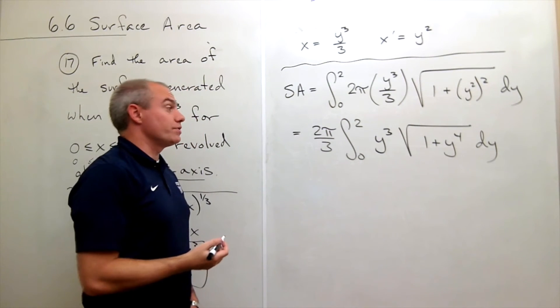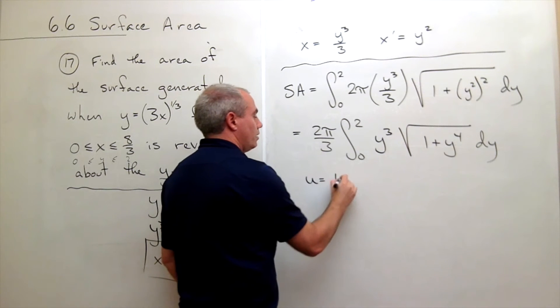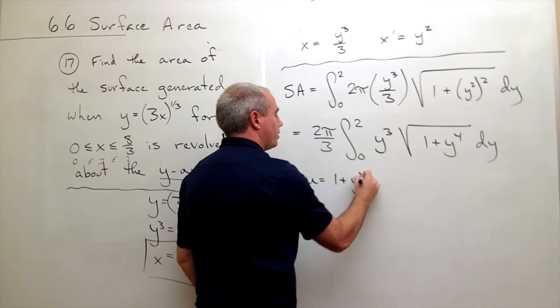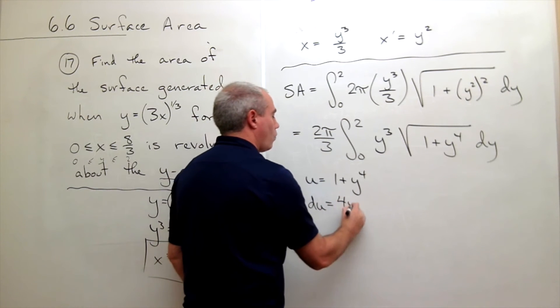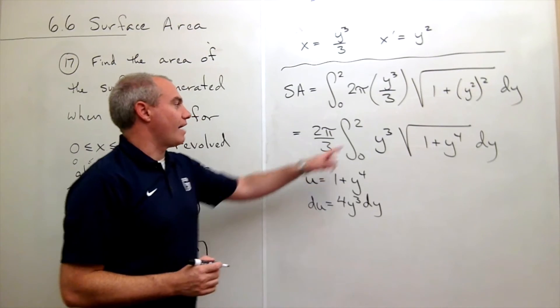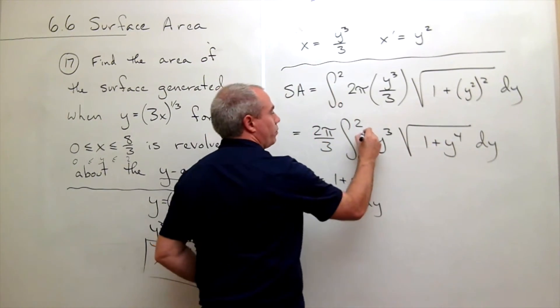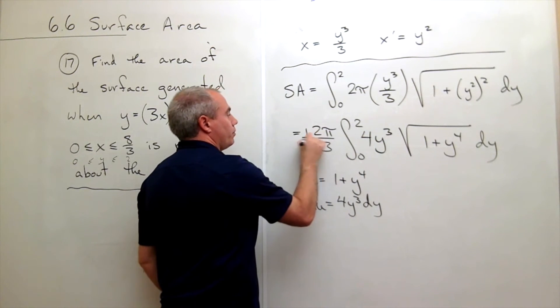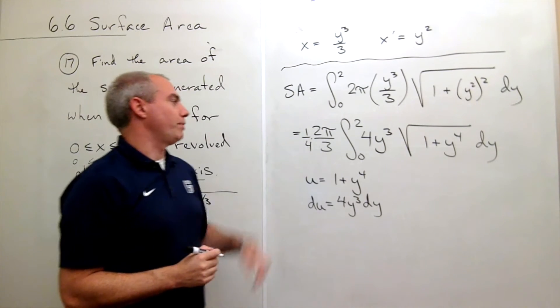This is a u substitution, so I'll let u be equal to 1 plus y to the 4th, which means that du will be 4y cubed dy. I have a y cubed dy, I need a 4y cubed dy, so I'll just put in a 4 and put in a 1/4 outside. So I just multiplied by 1.